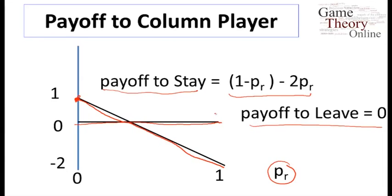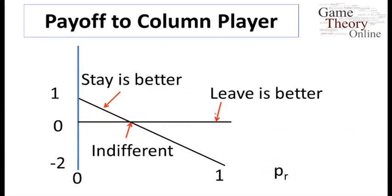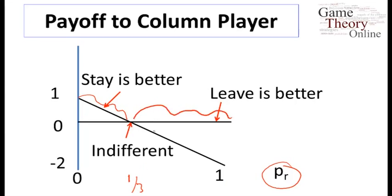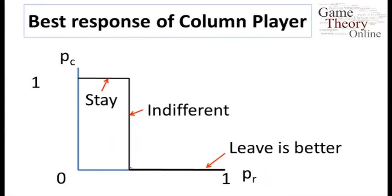In terms of best responses for the column player, stay is better when the probability of the row player staying is less than one-third. Leave is the best response when pr is bigger than one-third, and they're indifferent exactly at one-third. The column player's best response correspondence is similar to the row player's, except their indifference point is one-third instead of three-fifths, reflecting the slight asymmetry in payoffs.